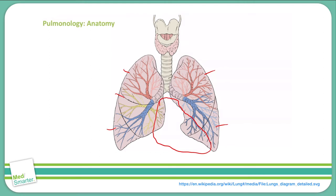The carina, which is the split of the bronchus into the right and left bronchus, is immediately posterior to the ascending aorta, which then turns and returns back down towards the feet.